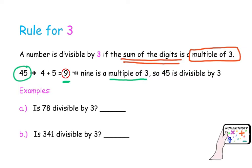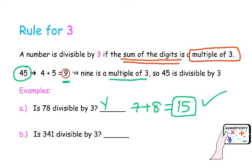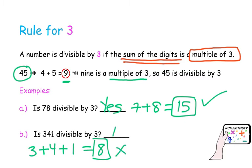Is 78 divisible by 3? Let's apply the rule: 7 plus 8 equals 15. 15 is a multiple of 3, so without doing any calculation, we can say that 78 is divisible by 3. What about 341? Adding the digits: 3 plus 4 plus 1 equals 8. 8 is not a multiple of 3, so even without using a calculator, we can say that 341 will not be divisible by 3.